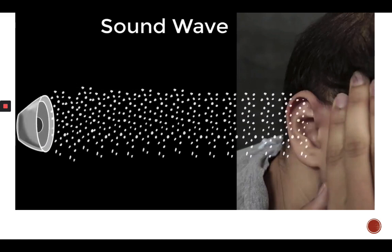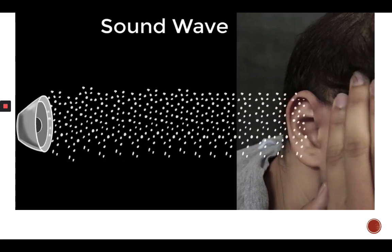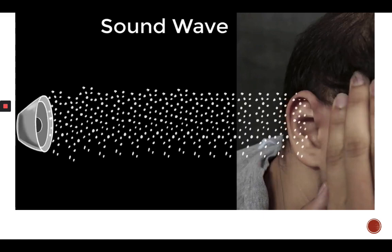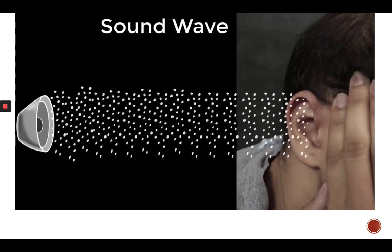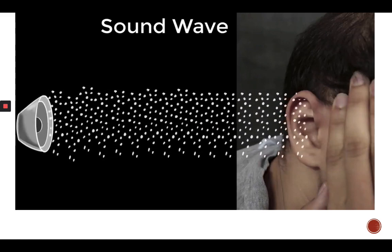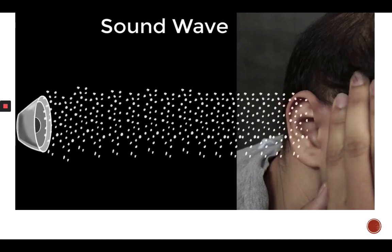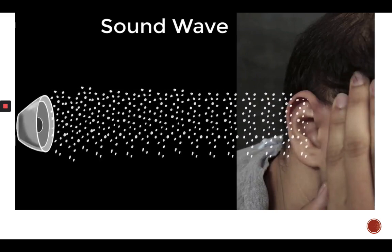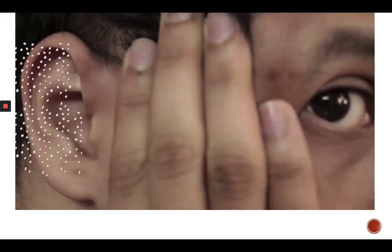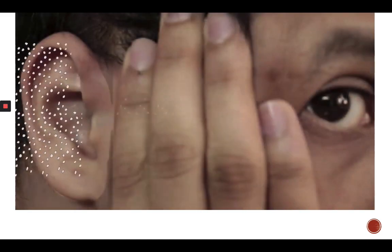But how does something as simple as air molecules going back and forth make us experience sound? To understand that, we need to look at the entire structure of the ear carefully.